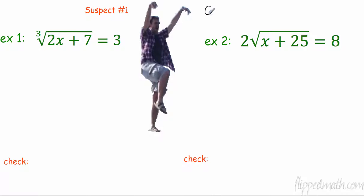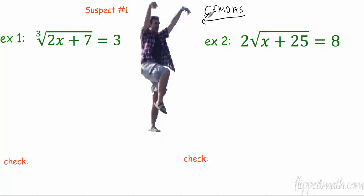A couple of things I want to remind you of. Remember GEMDAS — those are the order of operations. And when we solve equations, we like to solve them backwards. So where would these radicals fit? Well, that would be grouping. So we have grouping. Do we have anything outside of the grouping? No. So really, the first thing I had to undo is grouping.